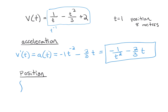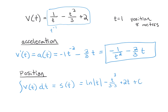For position, we take the integral of the velocity function. Taking the antiderivative: one over t becomes the natural log of the absolute value of t; then going up a power and dividing by that power gives us negative t to the third over nine; plus two t plus C. To find C we go back and use the initial condition, plugging in the position as y and the time as x.